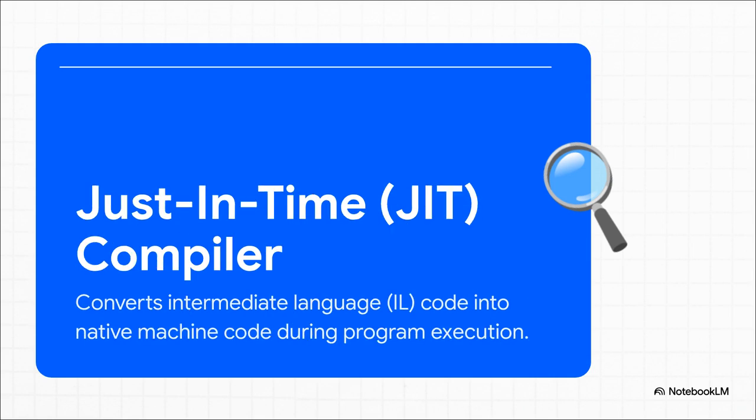So how does the CLR actually run your code? It uses something called the just-in-time compiler, or JIT. When you compile C# code, it doesn't immediately become machine code. First, it turns into this intermediate language, or IL. Then the JIT compiler steps in and translates that IL into native machine code right when the program is running. This clever two-step process is what makes .NET code so flexible.